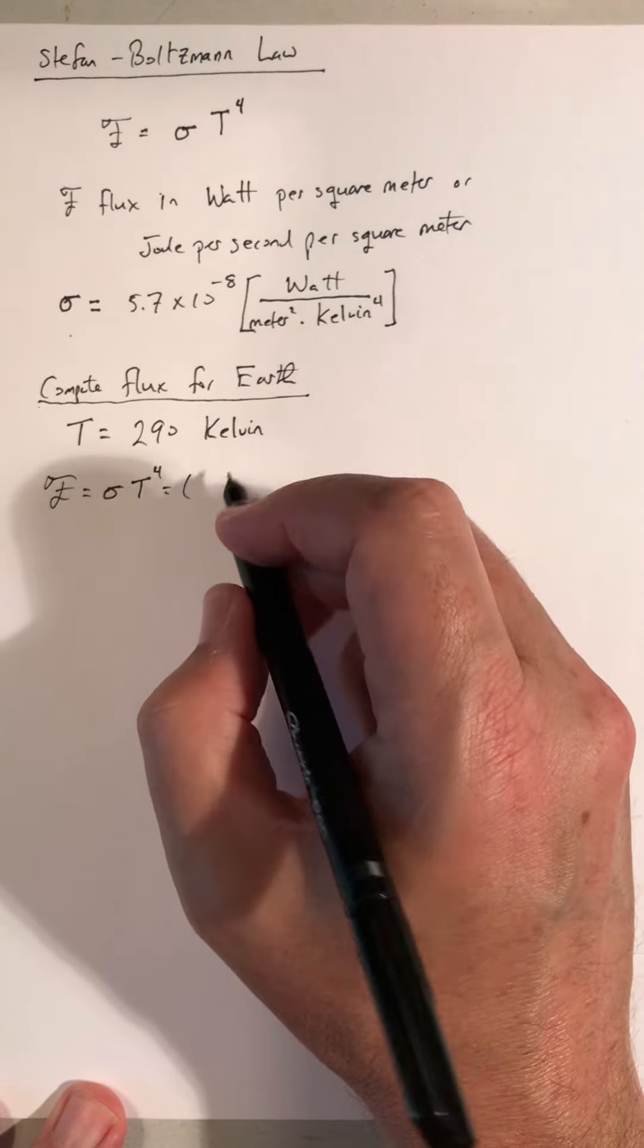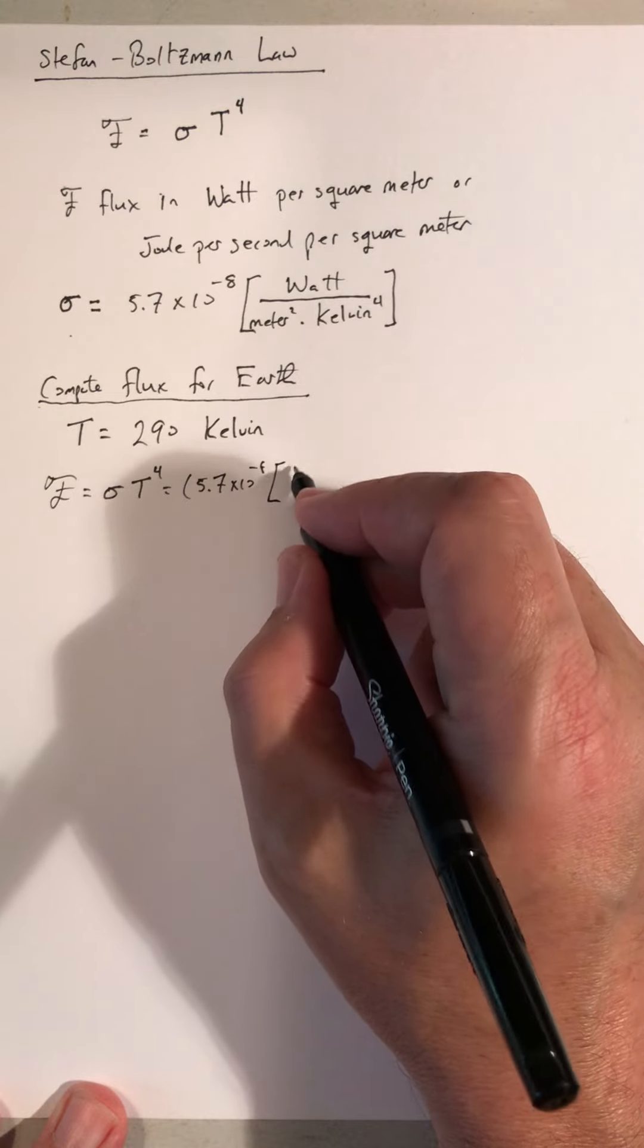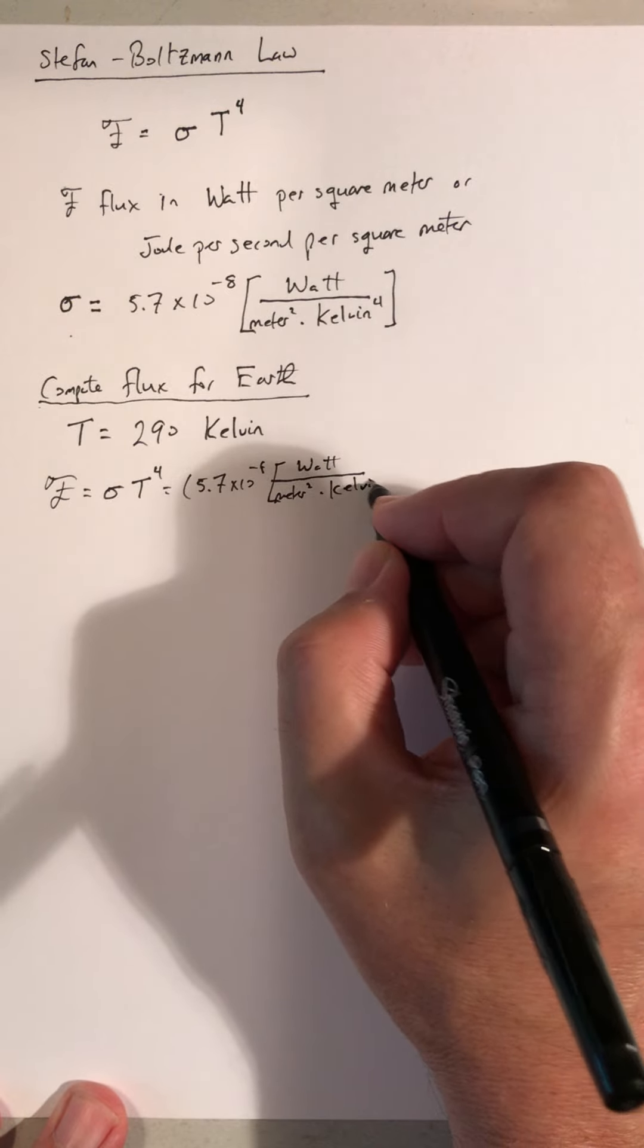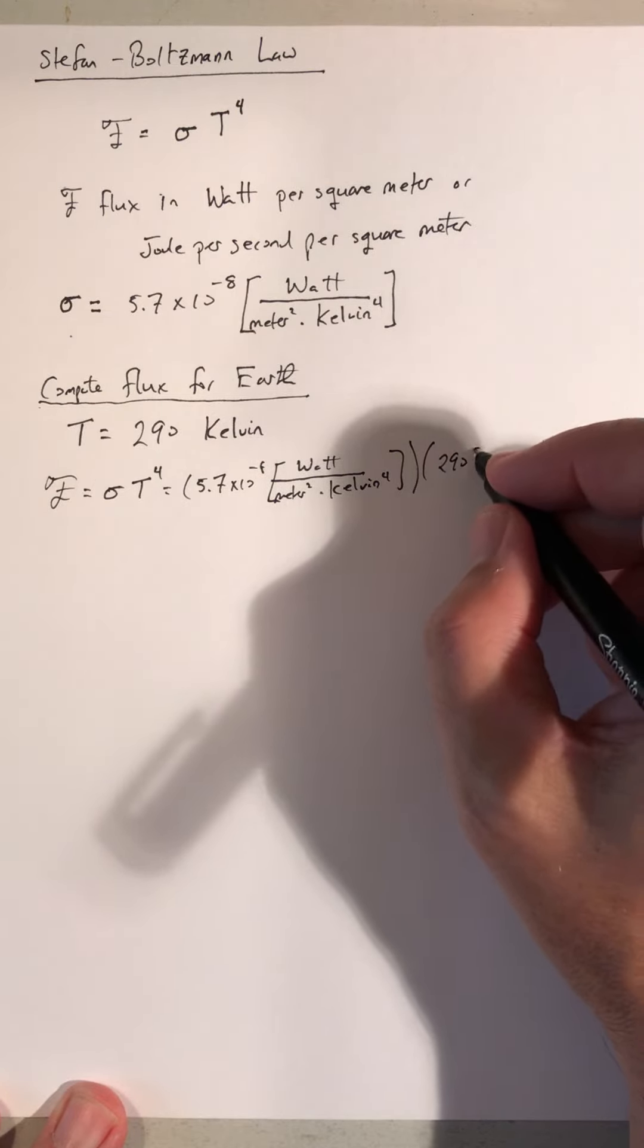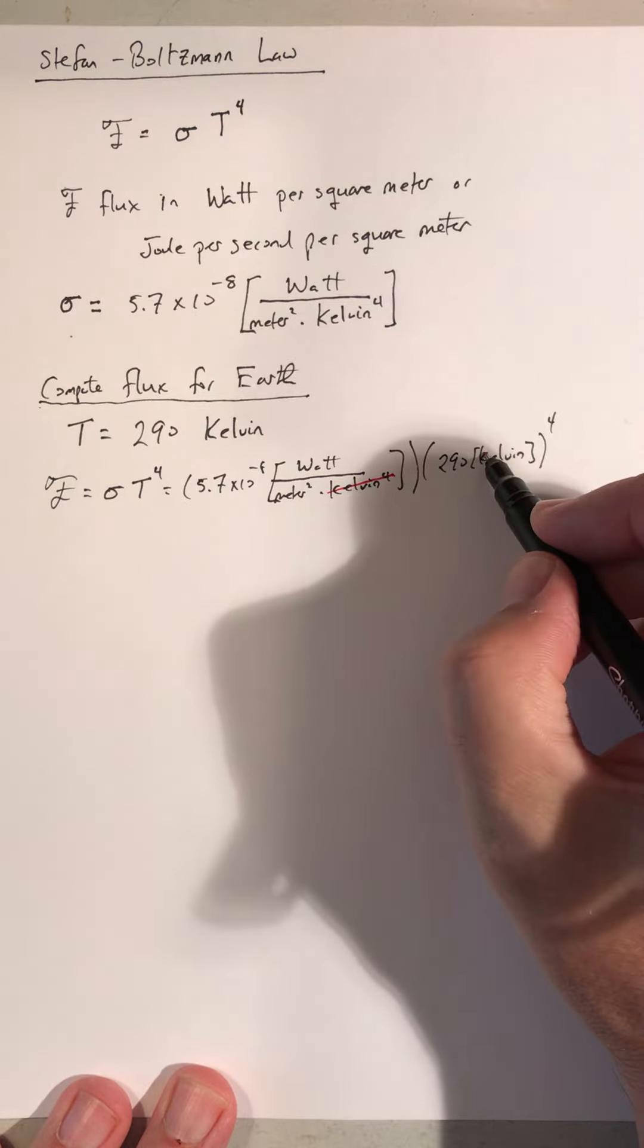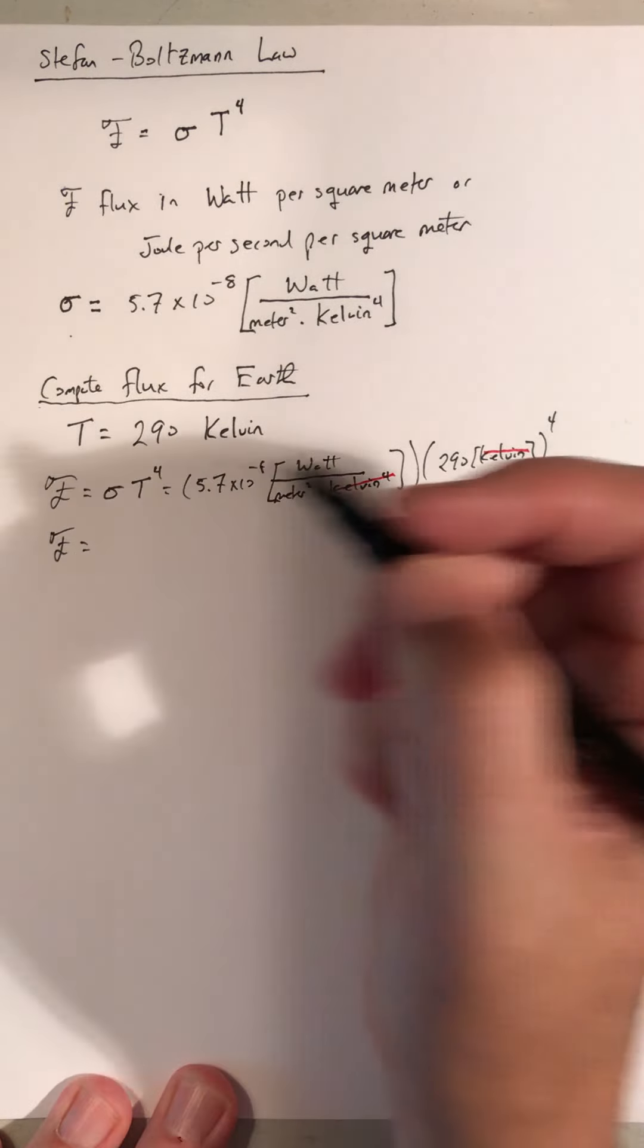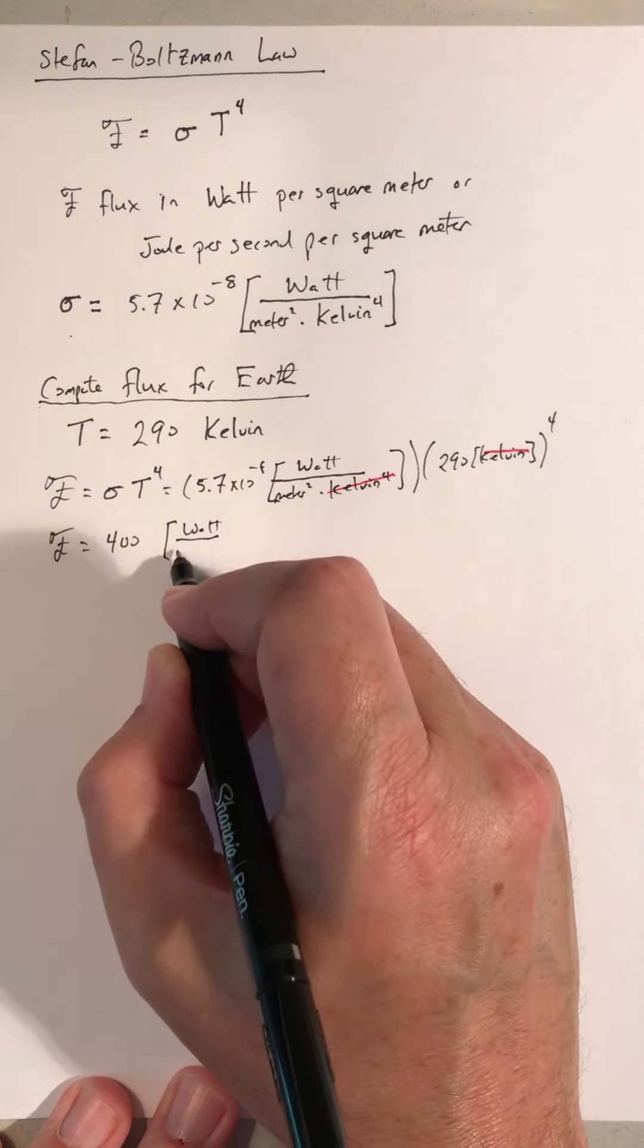And the Stefan-Boltzmann constant, sigma, 5.7 times 10 to the minus 8 watts per meter squared Kelvin to the fourth and 290 Kelvin to the fourth power. And that will give us a flux in watts per square meter, because Kelvin to the fourth there will cancel out from Kelvin when I raise it to the fourth power. And that works out to be a flux of 400 watts per square meter.